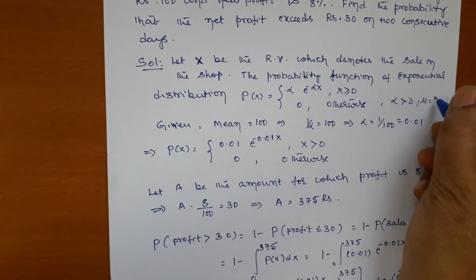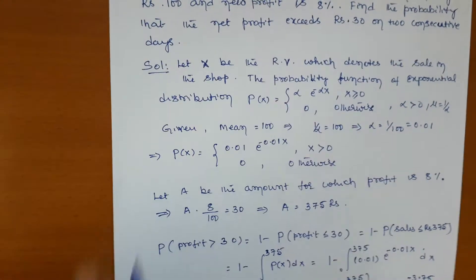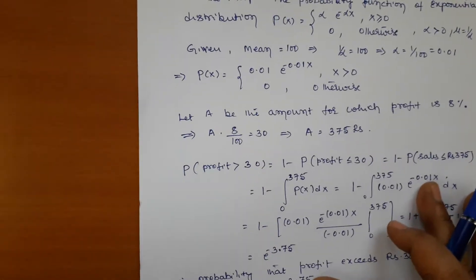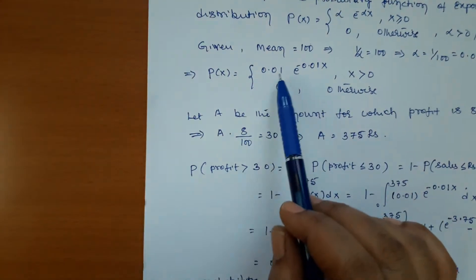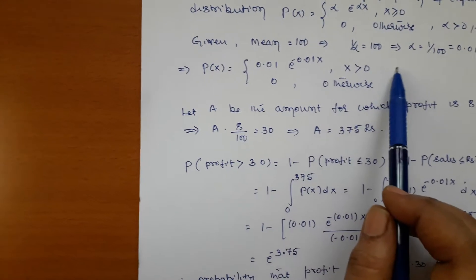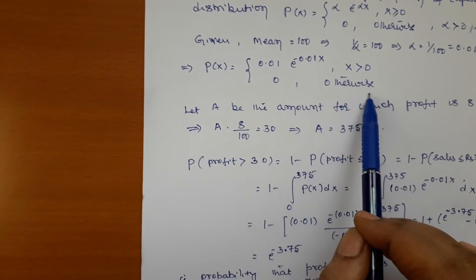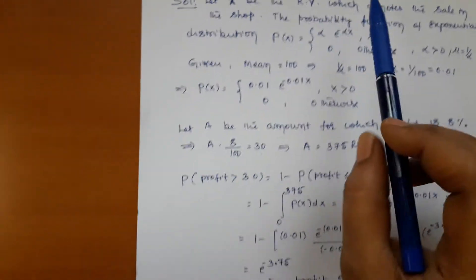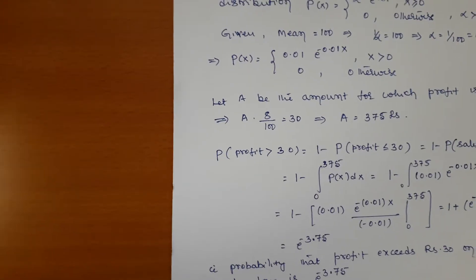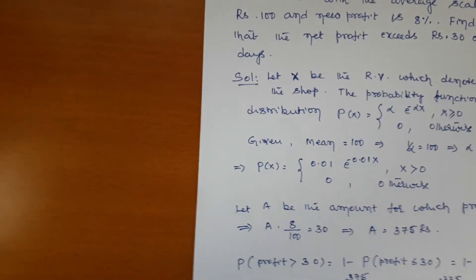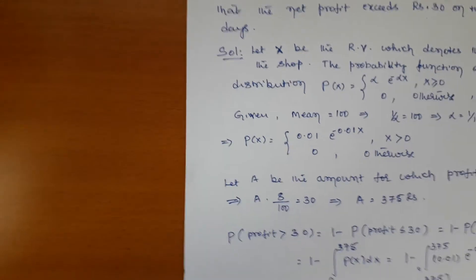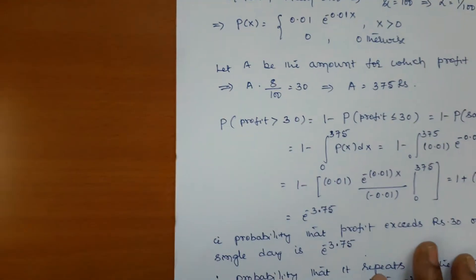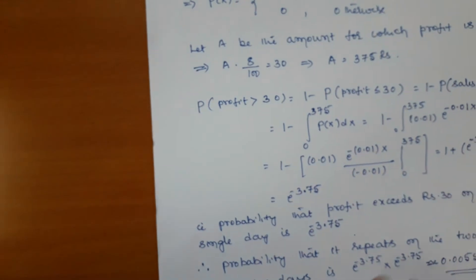The mean for exponential distribution is μ = 1/α. Since the mean is 100, we have 1/α = 100, so α = 0.01. The probability density function becomes f(x) = 0.01·e^(−0.01x) for x > 0, and 0 otherwise. Note that X denotes sales in the shop. They also give that the net profit is 8 percent, and we need to find for what sales amount the profit exceeds rupees 30.